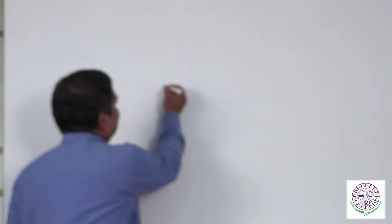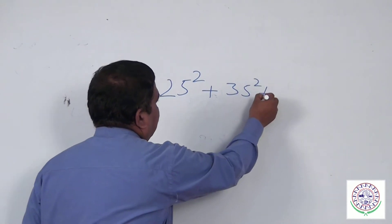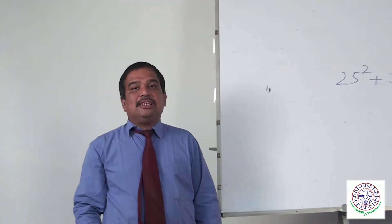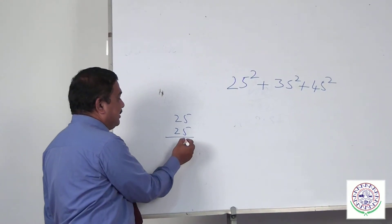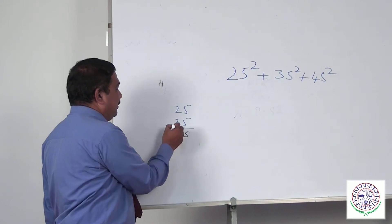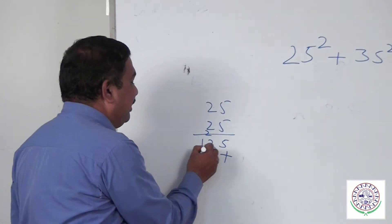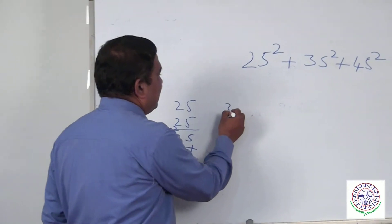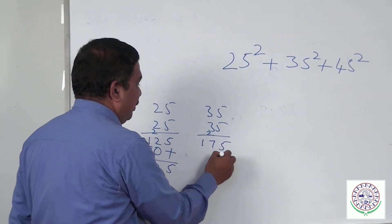Let's begin with a small example. If somebody asks you to calculate 25 squared plus 35 squared plus 45 squared, a traditional student tries to calculate 25 into 25, then 35 into 35, and so on — ending up taking a lot of time for each calculation.